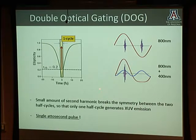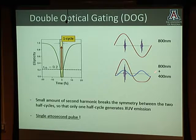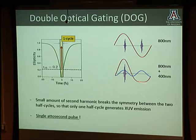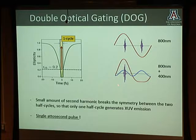But a one-cycle gate still has two half-cycles, each producing an attosecond burst. To localize to just one burst, you break the symmetry between the two half-cycles by adding a weak second harmonic—a little bit of blue field—phase-matched so that the positive and negative half-cycles have asymmetric amplitudes. Now only one half-cycle will produce the radiation of interest, giving you a single attosecond pulse, which is ideal for the type of electron correlation experiments we are trying to do.